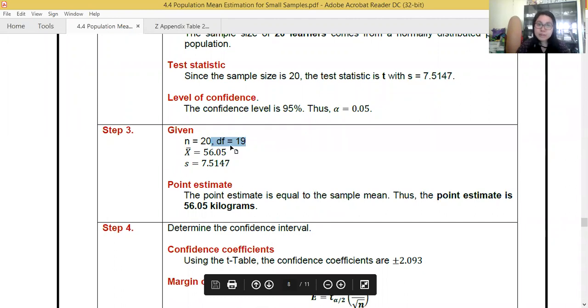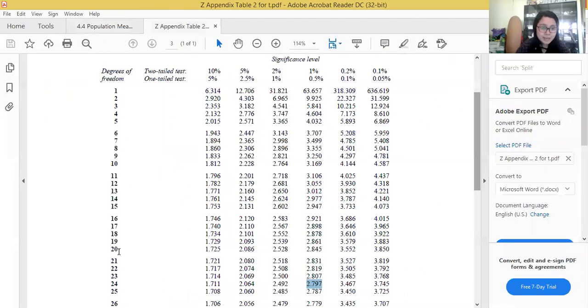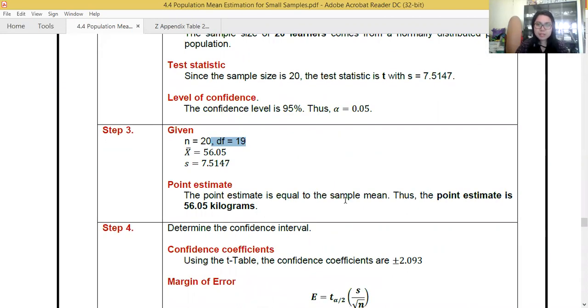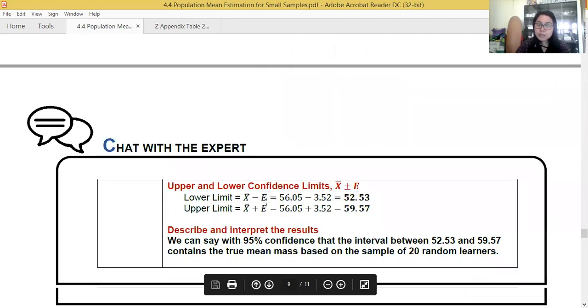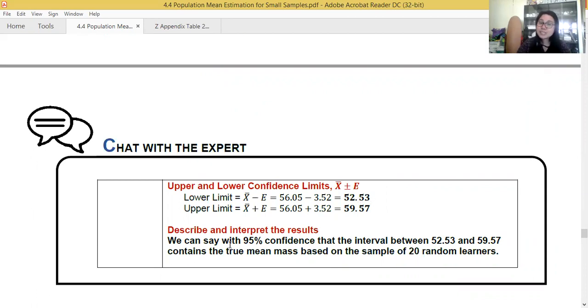with a degree of freedom of 19, let's go back here. That's 19. Two-tailed test at 5%. So our tabular value is 2.093. We compute for the degree of margin of error, that's 3.52. So we add it to our sample mean, we'll get 59.57. We subtract it, we get 52.53. So we state our interpretation. We say,